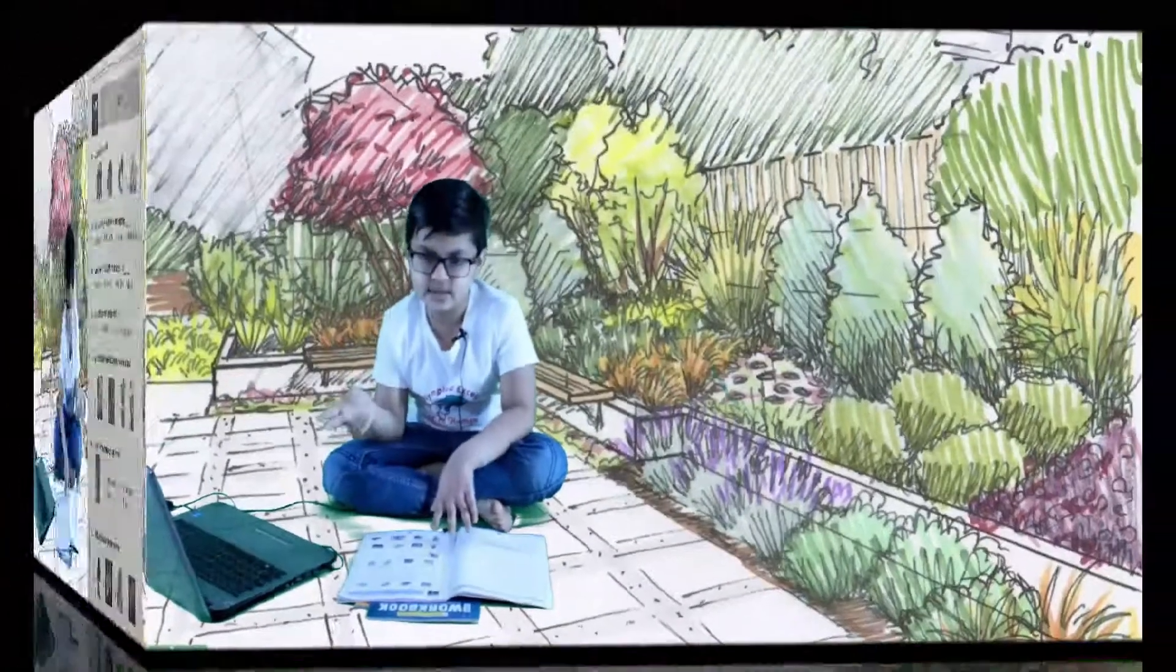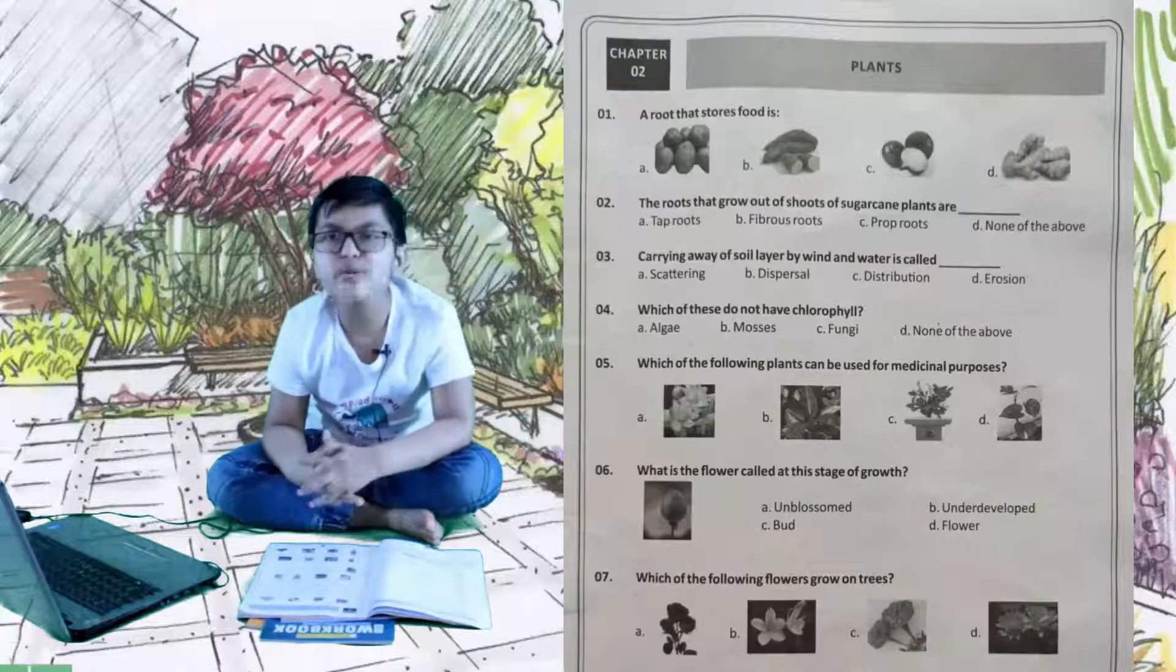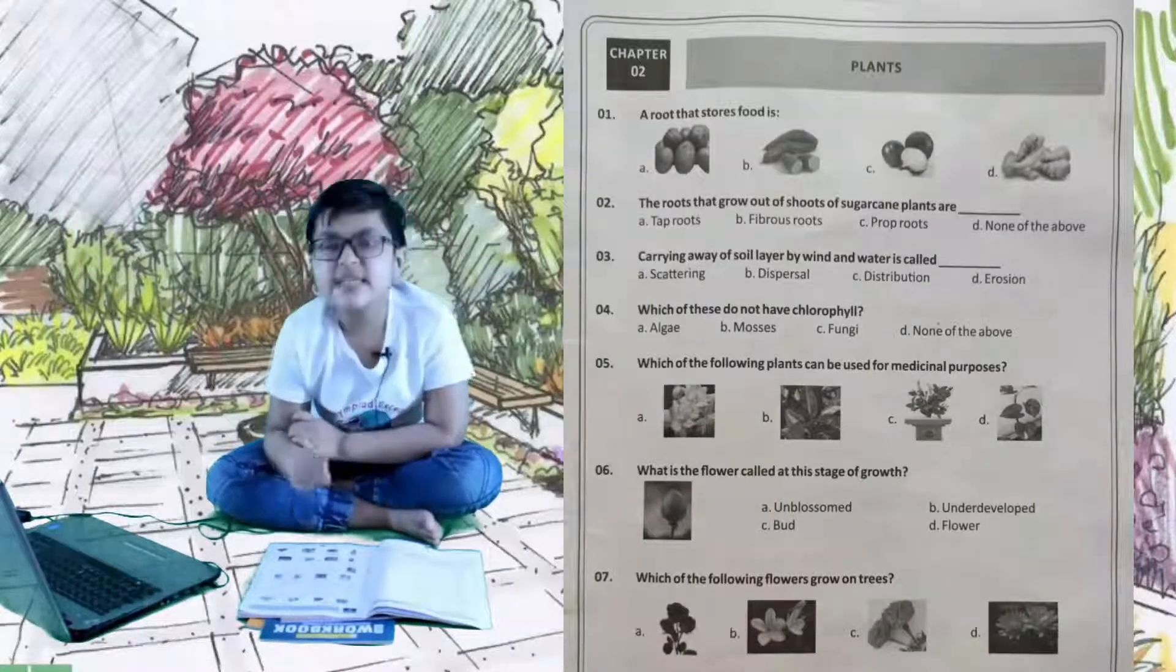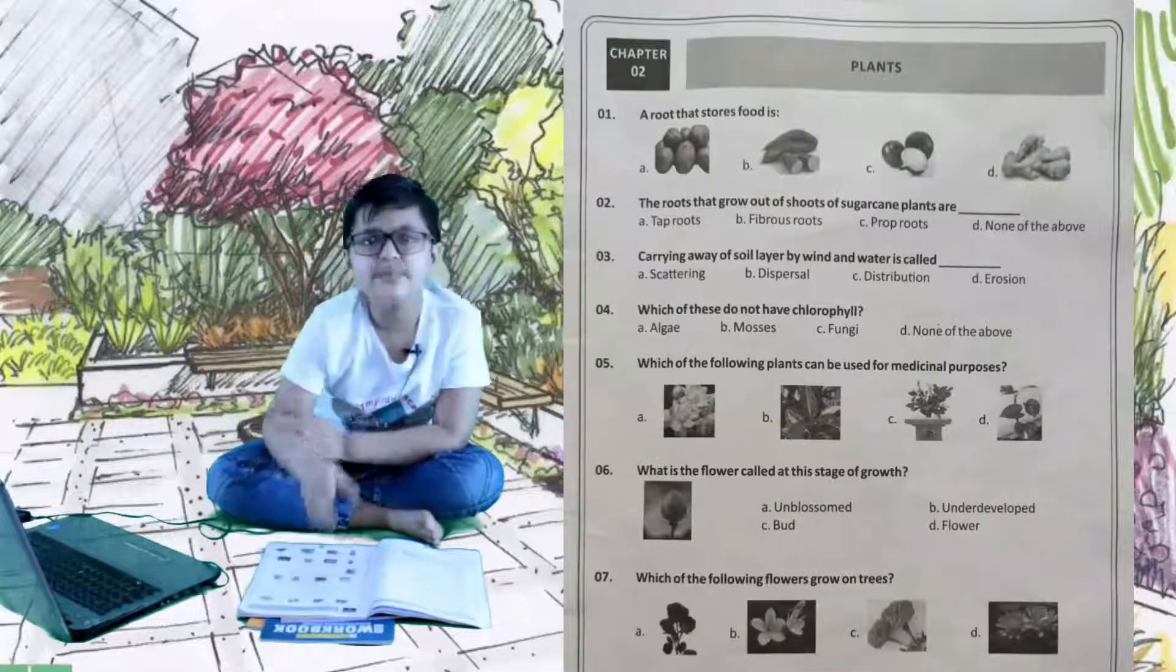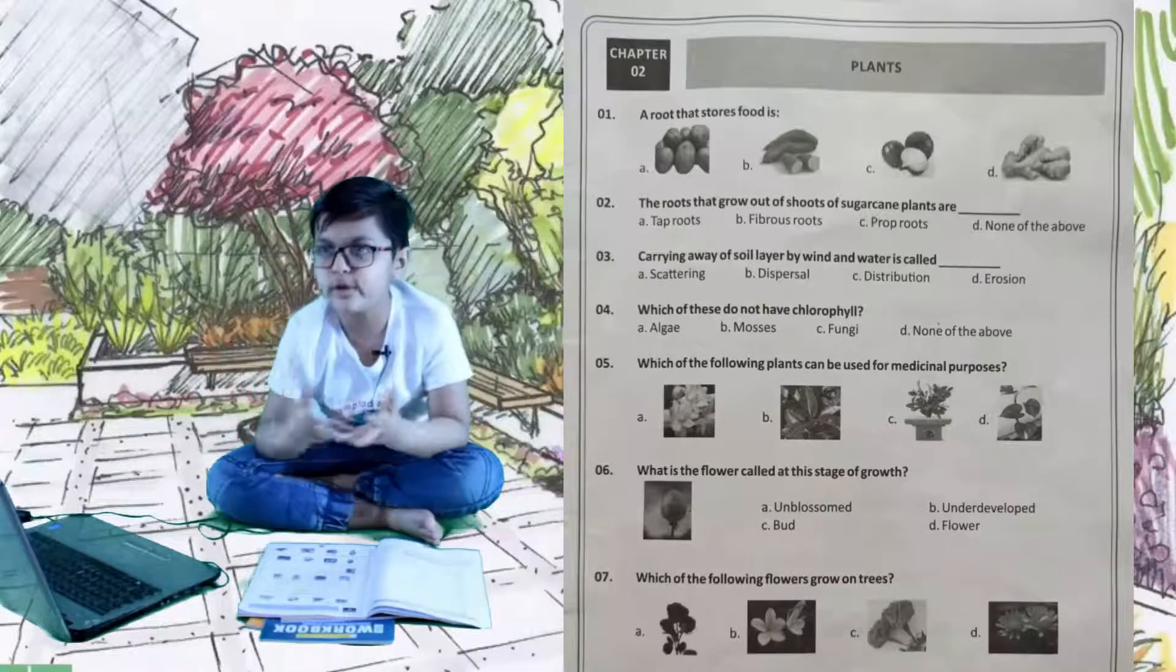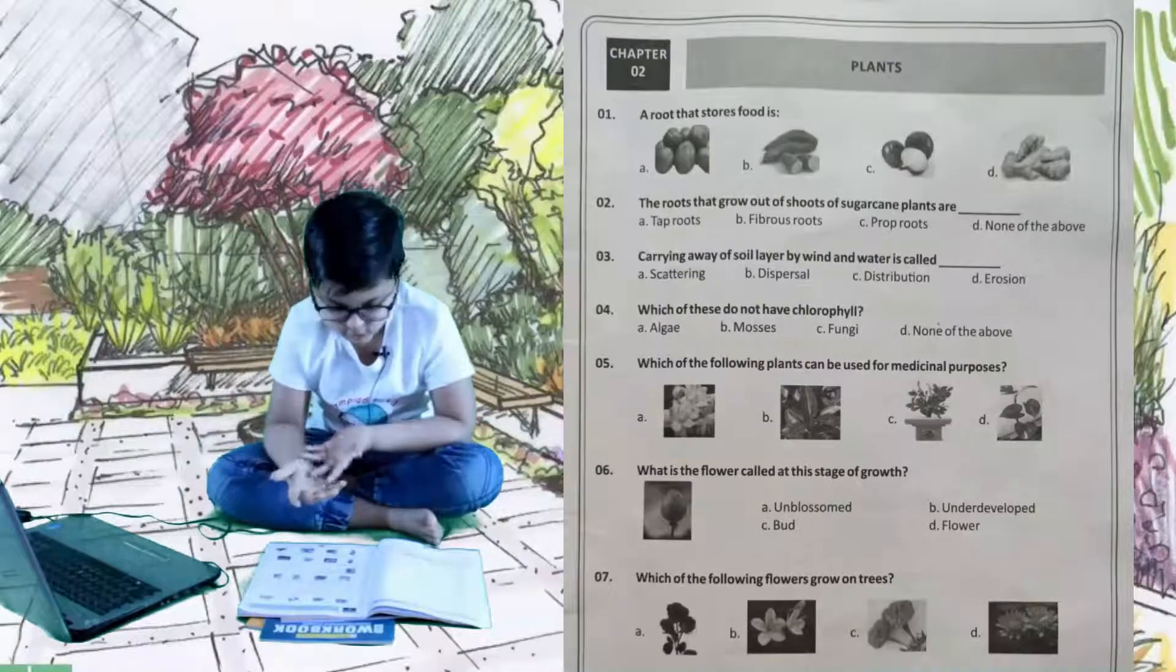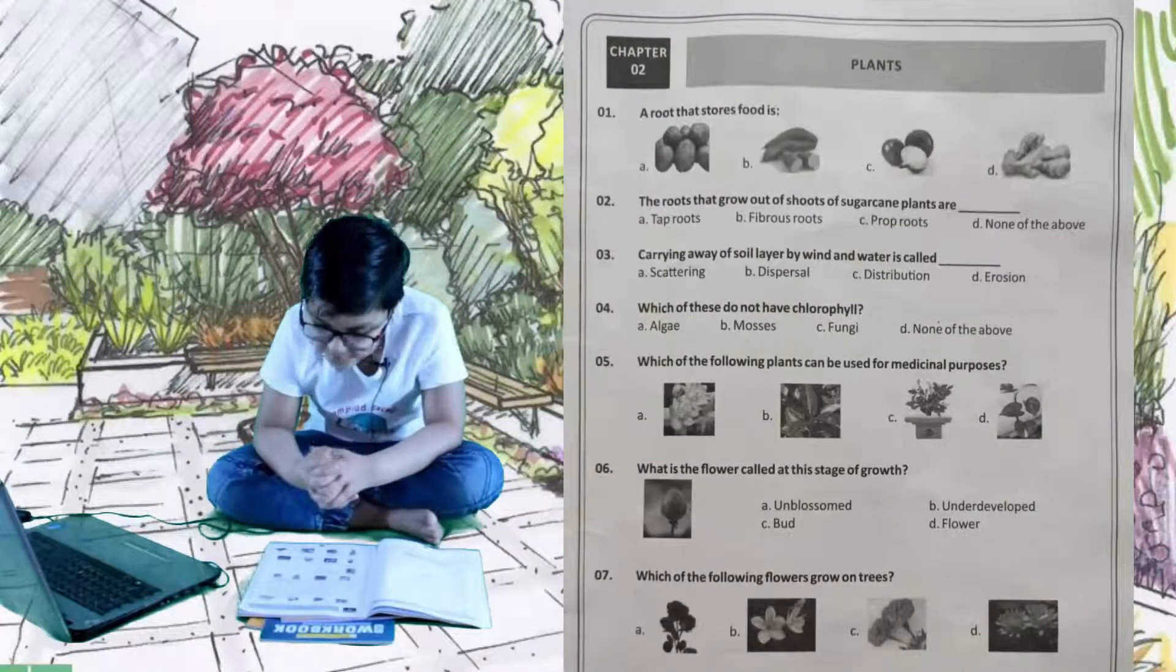Let's go to the next chapter, that is plants. Question number one is: a root that stores food is A is normal potato, B is sweet potato, C is onion, and D is ginger. The right answer is B because only sweet potato has a modified root. Modified root means a root that is modified.